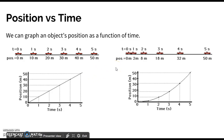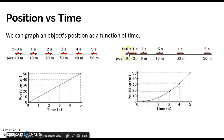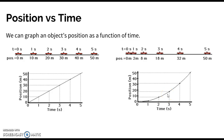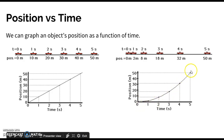We can also plot a position versus time graph for an object that's accelerating or speeding up. We start from rest and every second we increase our displacement. We literally just graph our position at certain time intervals — whatever data we collect or is given in the problem. Our best fit line here is going to be a curve.